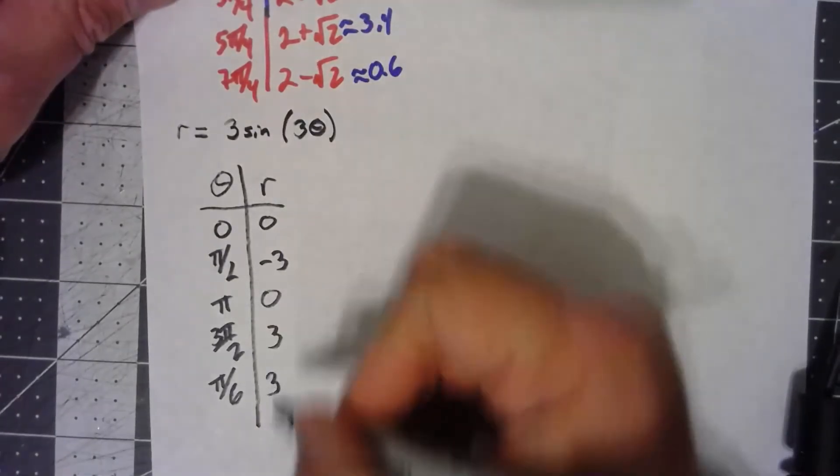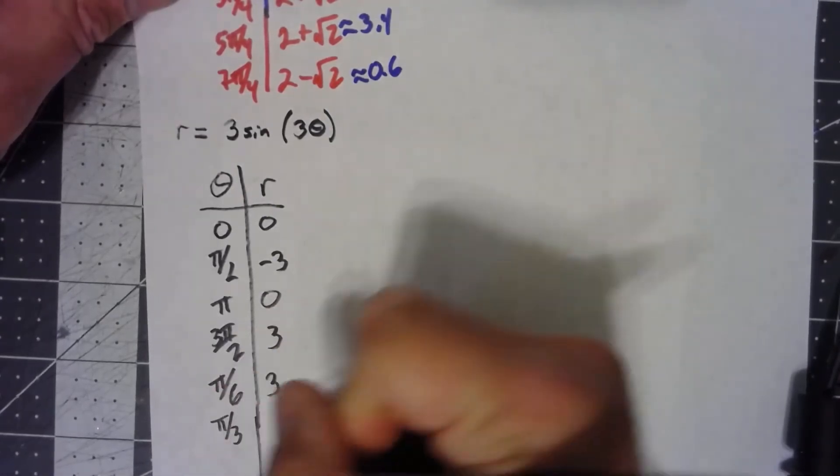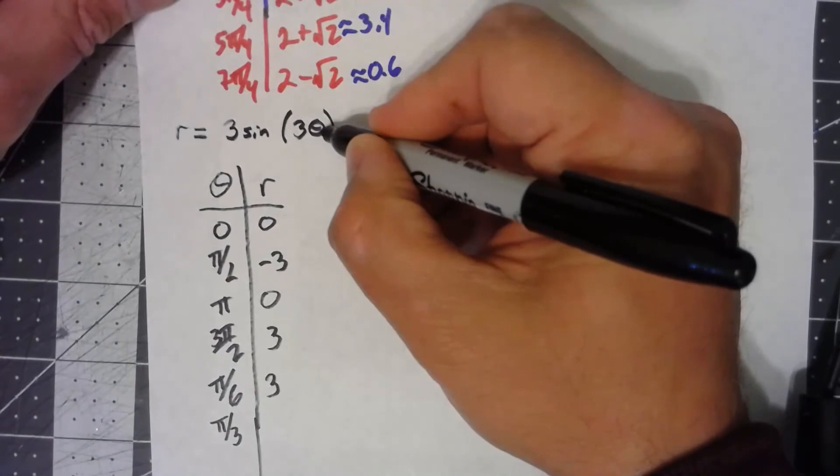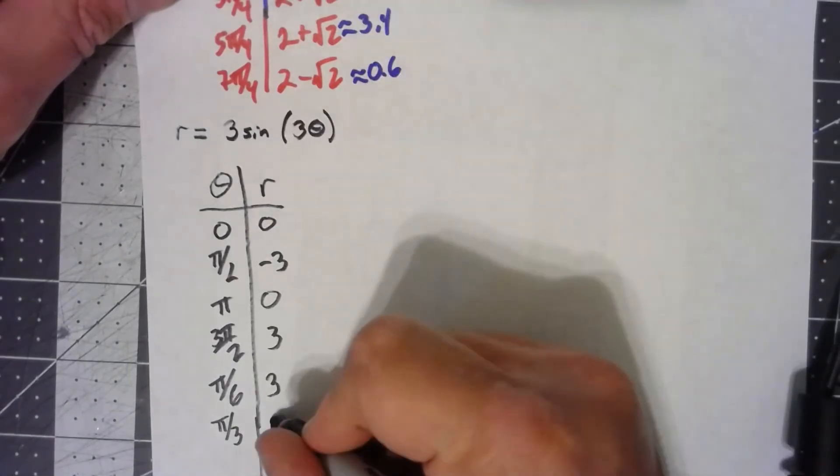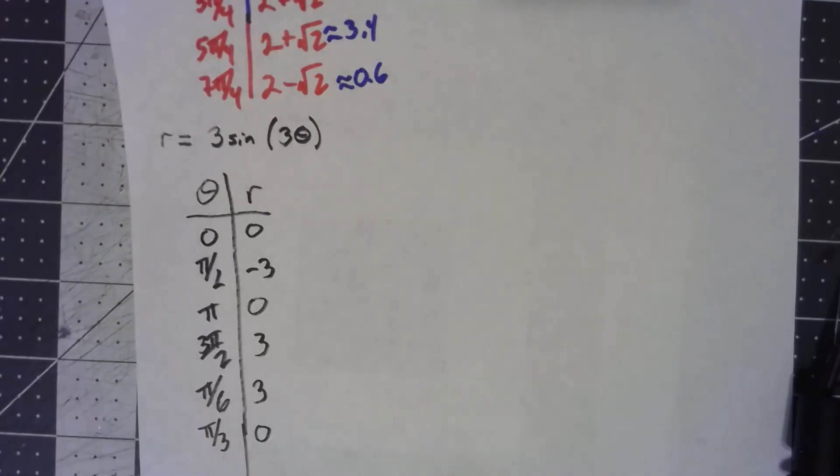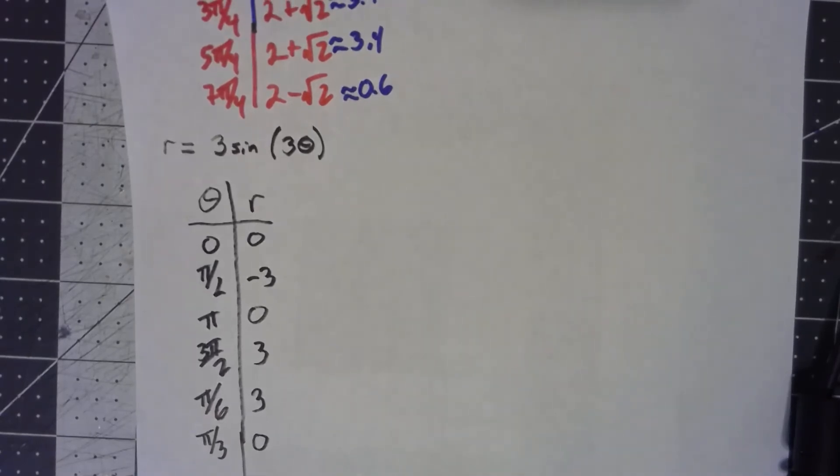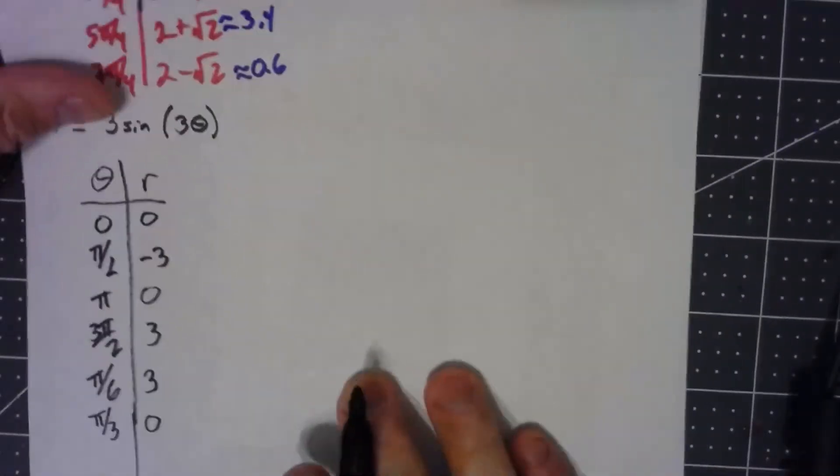If I put in pi over 3, 3 times pi over 3 is pi, and sine of pi is 0. And honestly, we should really just draw a whole lot more points. But you get the idea. So what happens here? Let me focus on the ones that are kind of in the first quadrant.